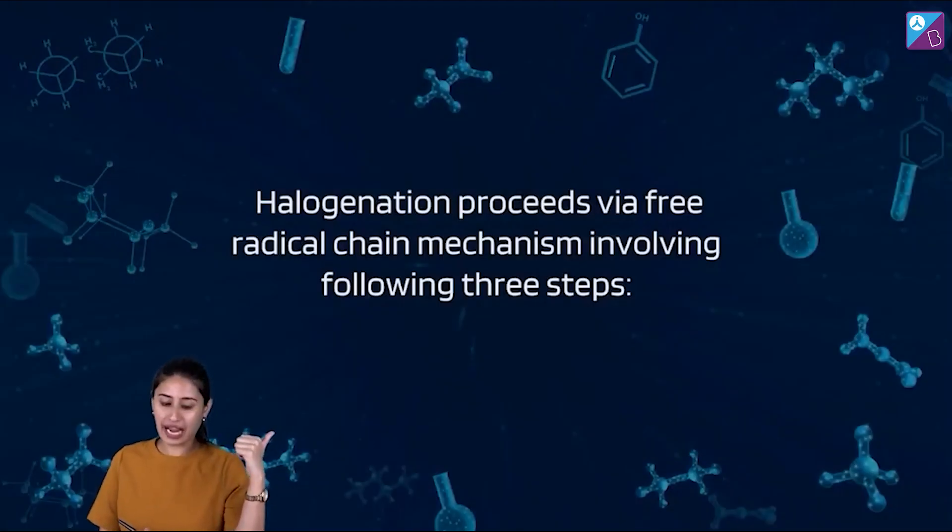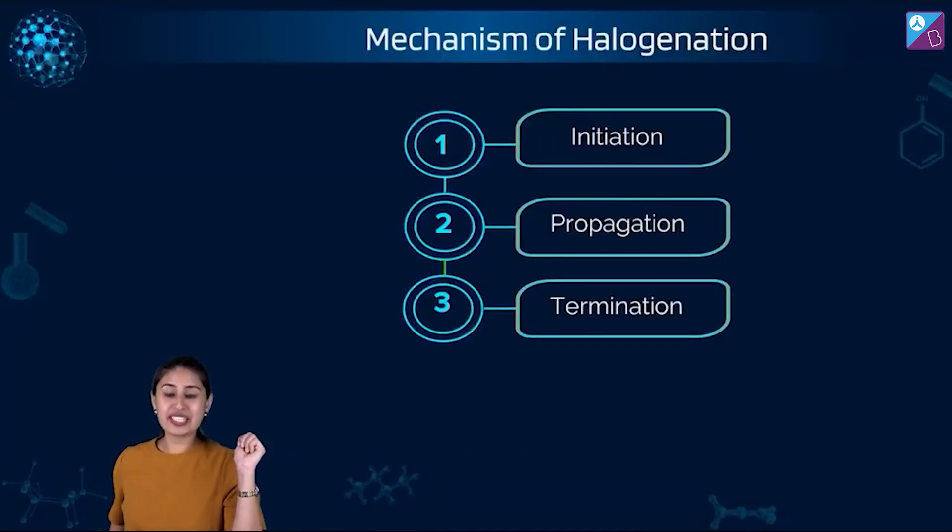Halogenation proceeds by a free radical chain mechanism involving three steps. First is initiation, the second is propagation, and the third one is termination. Let's understand now with chemistry perspective.